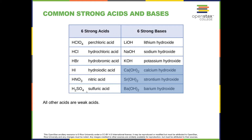The take-home message is there are six strong acids. If an acid is not one of these six — if a substance donates a proton and it is not one of these six strong acids — it's a weak acid. How acids behave depends on whether they're strong or weak.